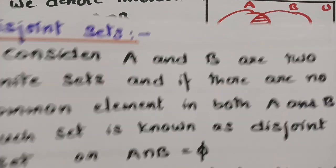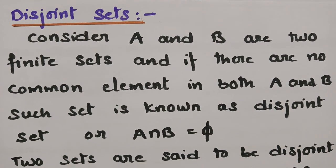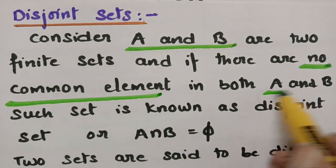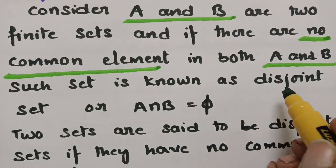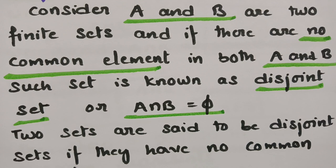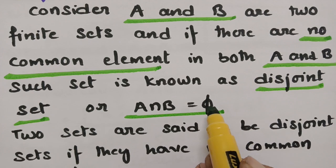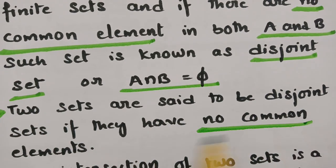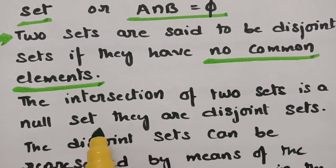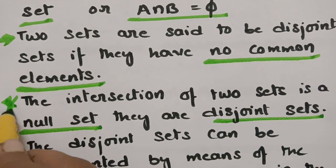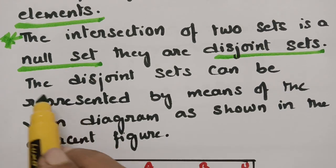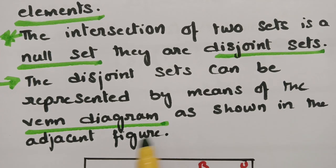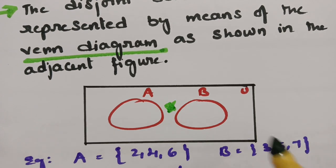The next operation is disjoint sets. If A and B are two finite sets and there is no common element in both A and B, such sets are called disjoint sets. If A ∩ B is empty, then we say that A and B are disjoint. Two sets are said to be disjoint if they have no common elements — the intersection of two disjoint sets is a null set. Disjoint sets can be represented by means of a Venn diagram where the circles for A and B do not overlap.